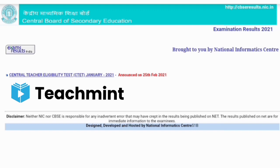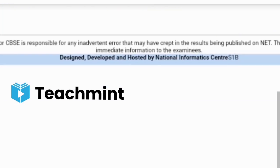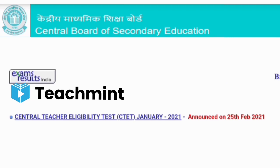When the result is declared, it will be written here: 'CVC 10th Result Out' or something similar. You can click on it, enter your roll number, and check your result. So subscribe to the channel so that when the result comes, you get the notification first. Thank you and have a good day.